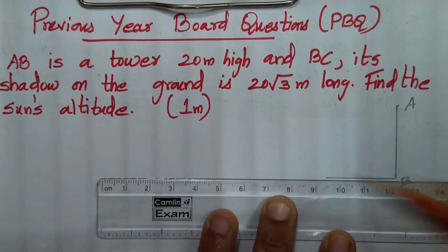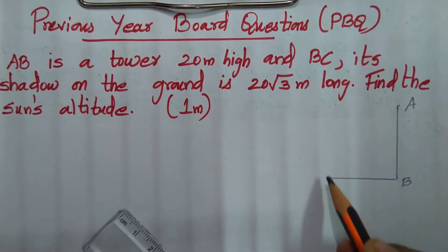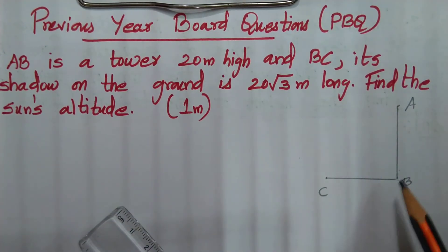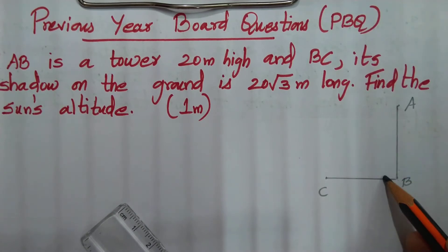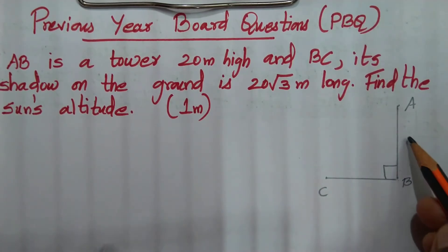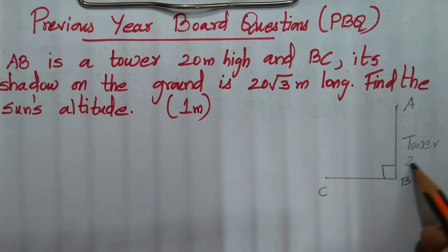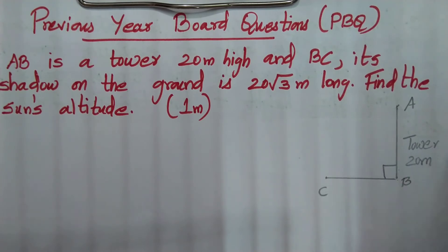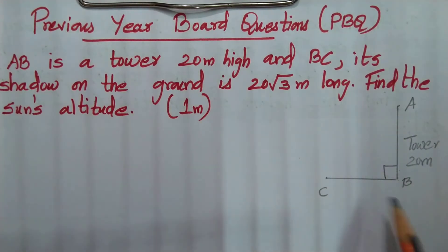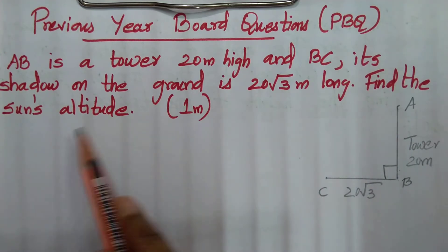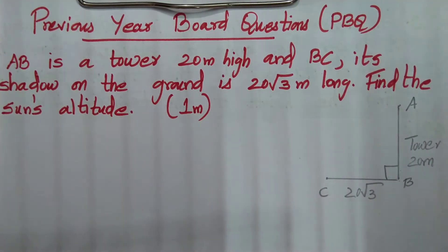BC is the shadow. This is a vertical right triangle. The tower height is 20 meters and BC is the shadow with length 20 root 3. Now I will find the sun's altitude.